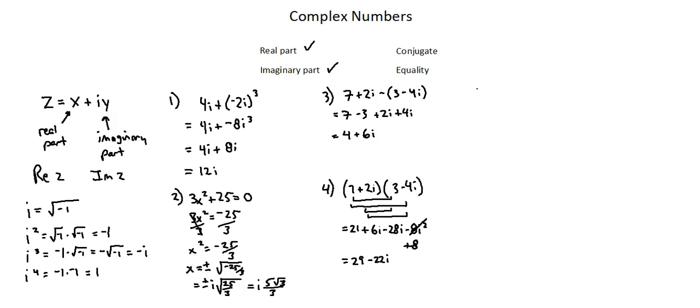In example five, let's again use the same numbers from three and four. This time we're going to perform division. Seven plus two i divided by three minus four i. And here we're going to learn about the concept of a complex conjugate.